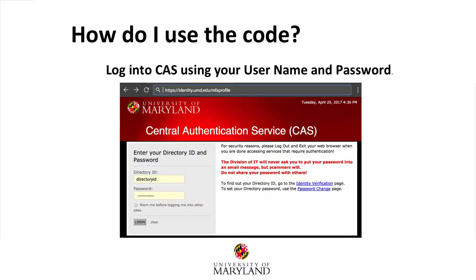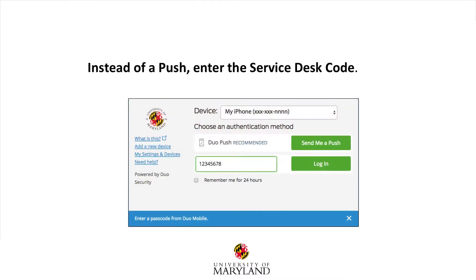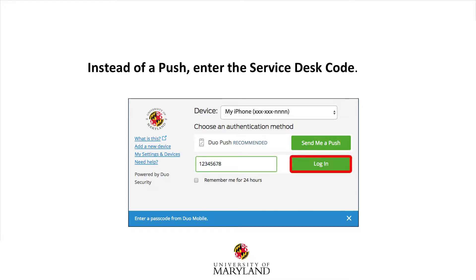Once you have called the Service Desk and acquired a one-time use code, visit identity.umd.edu/mfaprofile. Enter your university directory ID and password, then select Login. Instead of sending a push, enter the bypass code you received from the Service Desk, then select Login.